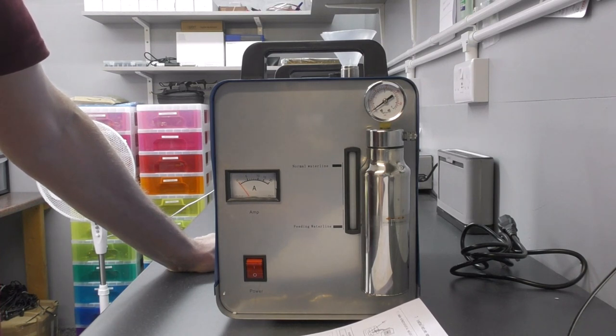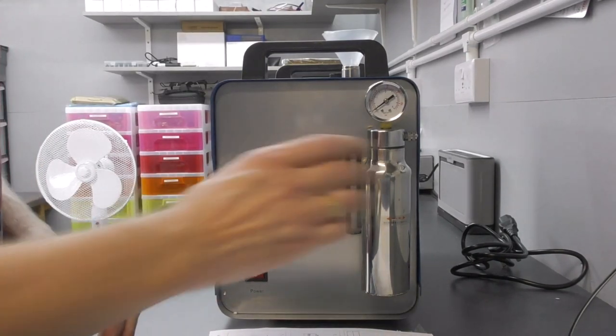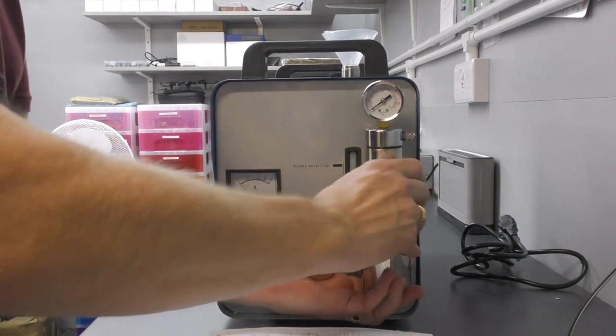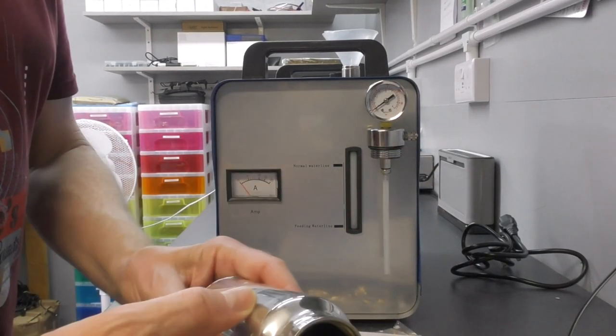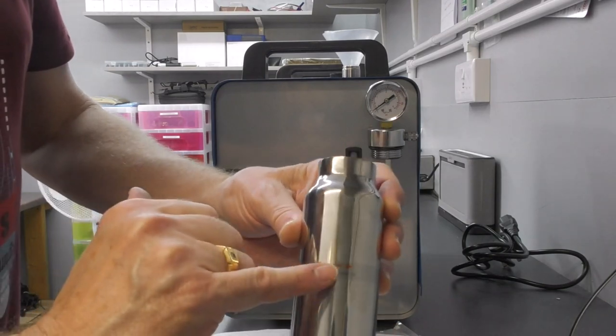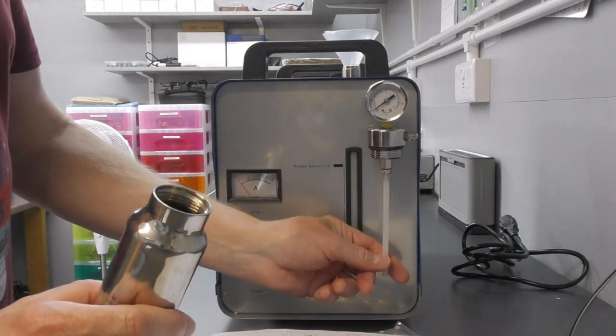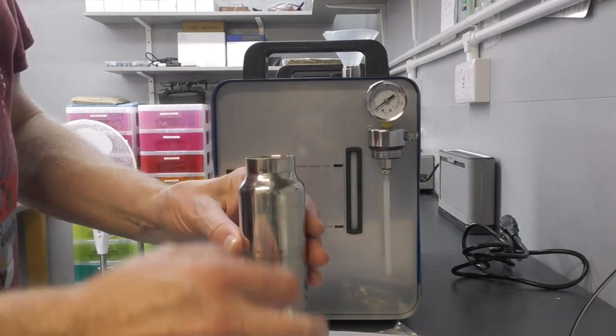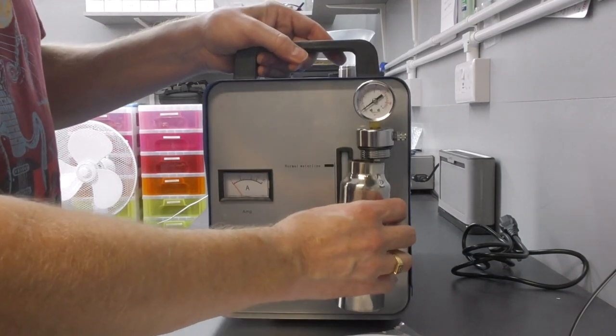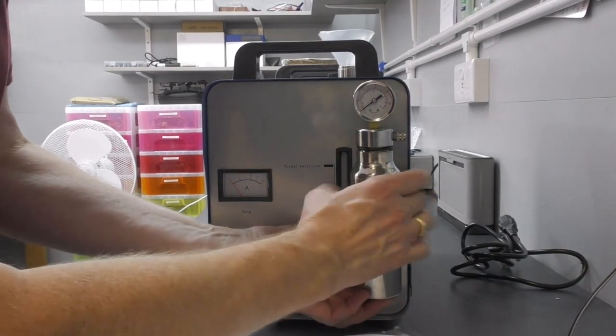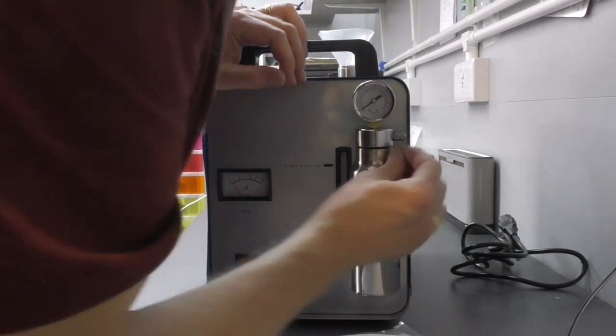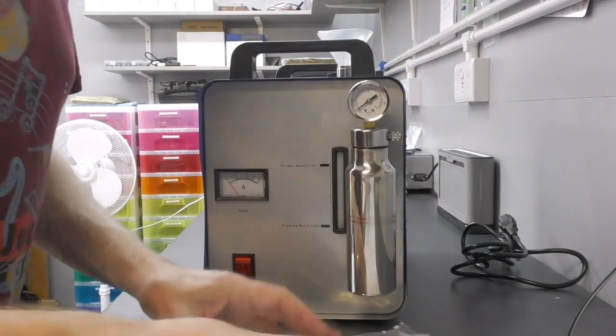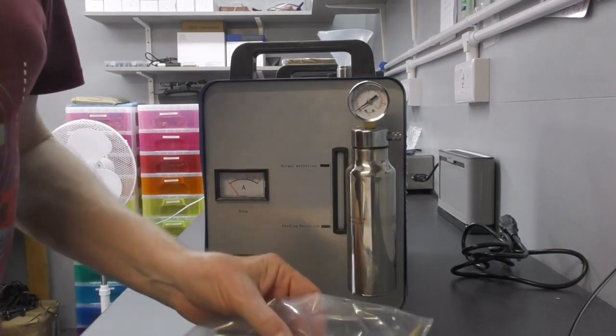That goes into the top. You've then got this container here, and this is where you add your ethanol. It goes up to this fill line here. Basically the gases will bubble out through the bottom and come up, pressurize this canister, and then you can adjust from the torch here how much gas actually comes out.